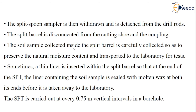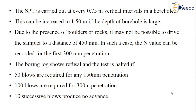The soil sample collected inside the split barrel is carefully preserved to maintain its natural moisture content and transported to the laboratory. Sometimes a thin liner is inserted within the split barrel, and at the end of the SPT, the liner containing the soil sample is sealed with molten wax at both ends to preserve its natural properties before being taken to the laboratory. The SPT is carried out at every 0.75 meter vertical intervals in a borehole, increased to 1.5 meters if the depth is very large. Due to the presence of boulders or rocks, it may not be possible to drive the sampler 450 mm; in such cases, the N-value can be recorded for the first 300 mm penetration.